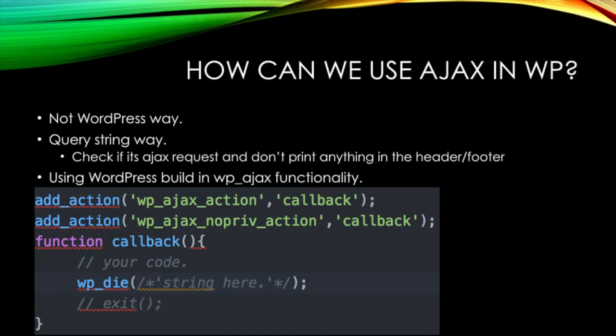Now that we know those two things, we can see how the WP Ajax functionality works. We can use 'wp_ajax_{action}' and put the function that should be executed when we hit that endpoint URL. Or we can use 'wp_ajax_nopriv_{action}', which stands for not logged-in users. You have to remember that you always have to have a 'wp_die' or an 'exit' at the end of the function, otherwise WordPress itself will print out just a '0' as a character.